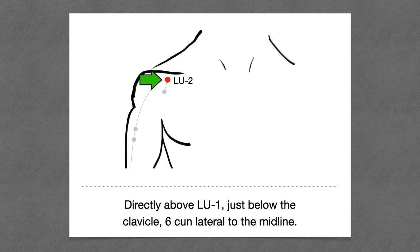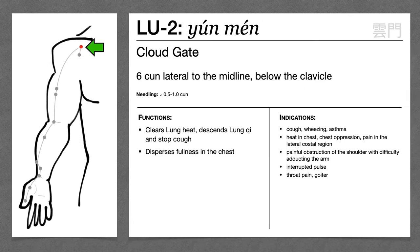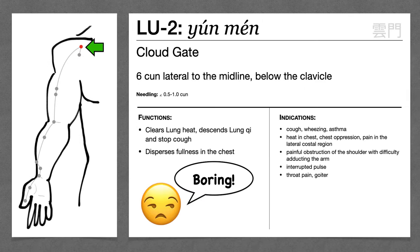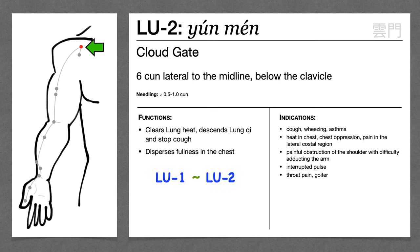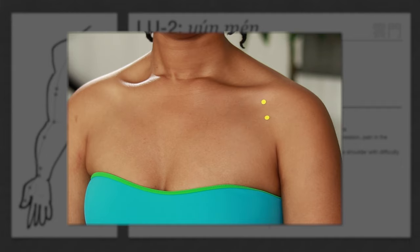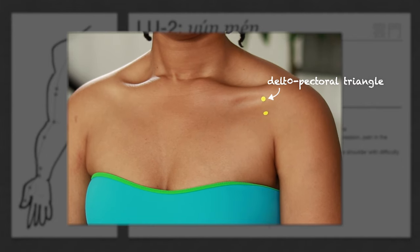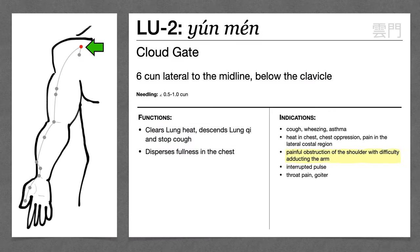Lung 2 is above Lung 1, just below the clavicle, six cun lateral to the midline. Lung 2 is honestly not that interesting — Maciocia says that Lung 2 is very similar to Lung 1 in its actions, but less strong. Because Lung 2 is close to the shoulder in the deltopectoral triangle, it can be used for shoulder pain, especially when there's difficulty adducting the arm.